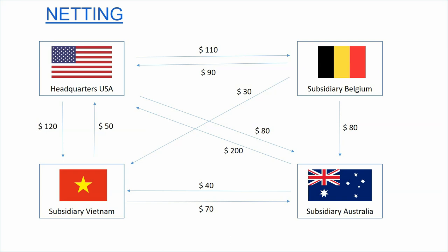The headquarters would need to pay 110 million to the subsidiary in Belgium, 80 million to the subsidiary in Australia, and 120 million to the subsidiary in Vietnam. But the headquarters should also receive 50 million from Vietnam, 200 million from Australia, and 90 million from Belgium. The Australian subsidiary should receive 80 million from Belgium, 70 million from Vietnam, and 80 million from headquarters, but also has to pay 200 million to headquarters and 40 million to Vietnam.